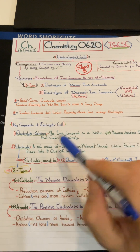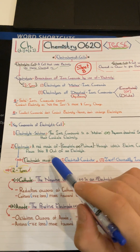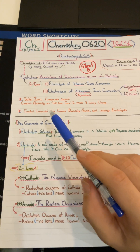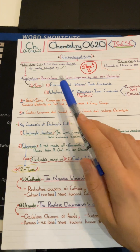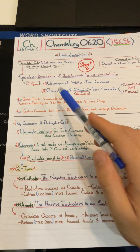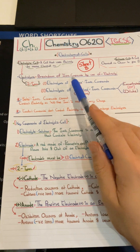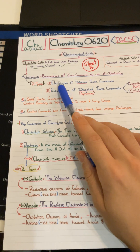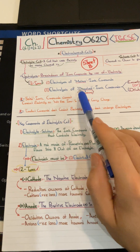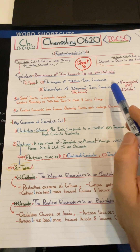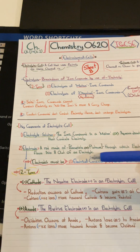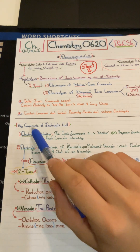Now let's review: an electrolytic cell makes electricity by electrolysis, which is the breakdown of ionic compounds using electricity. The two types are molten ionic compound electrolysis and aqueous dissolved ionic compound electrolysis, either concentrated or dilute. Let's now look at the components that make up an electrolytic cell.